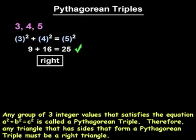Therefore, any triangle that has side lengths that form a Pythagorean triple must be a right triangle, such as the 3, 4, 5 triangle we've been discussing.